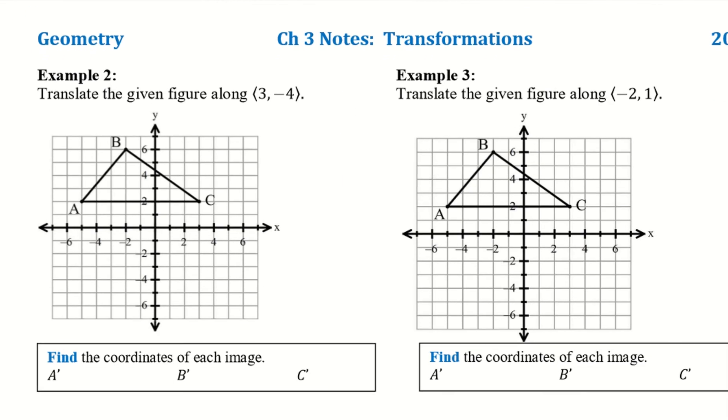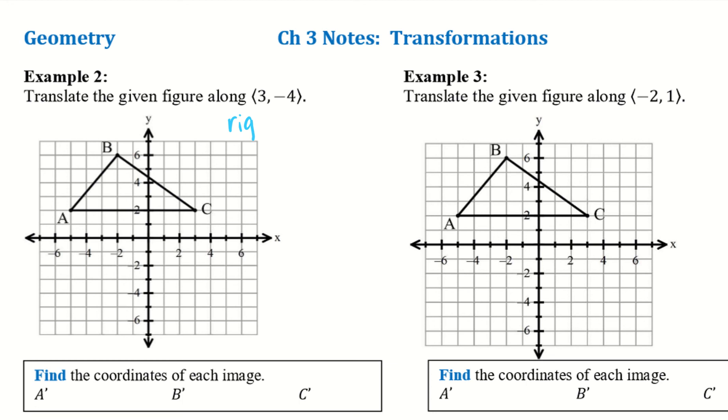Okay, let's take a look at example 2. So translate the given figure along 3, negative 4. So 3, that means I'm going to go up 3 and then negative 4. Or sorry, not up 3, right 3. Right 3 because it's my X and X goes left and right. And then my negative 4, which means I go down 4. So I'm going to go from each point and use this vector. So I'm going to go right 3 and down 4. So here's my new A value.